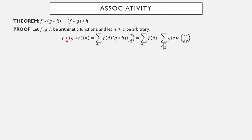First, pretend that g star h is a fixed function. I have f star something else, so I sum over the divisors of n: f of the divisor d times g star h of the cofactor n over d. Now let's unpack this inner convolution: g star h of n over d means summing over factors e of n over d, giving g of e times h of n over d over e. So here we have a representation of f star (g star h) of n.